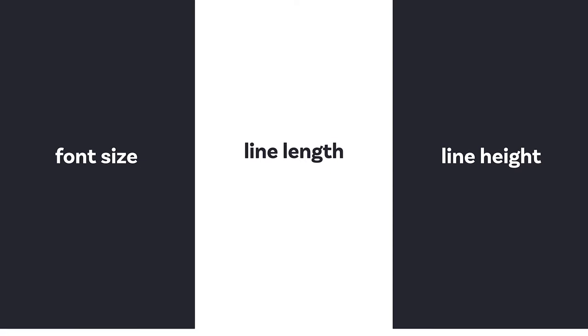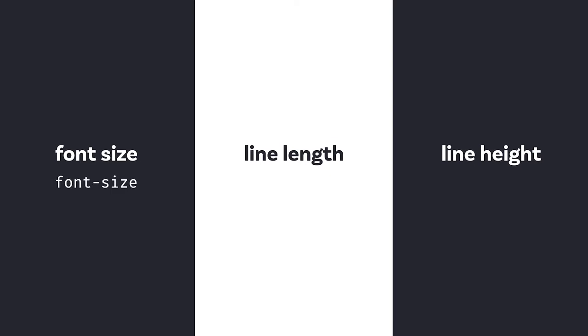Talking about setting your text right — you can pick the best typeface ever and still mess it up big time if you're setting it incorrectly. There are three main parts you have to consider when setting your text: font size, line length, and line height. I call this the holy trinity of typography.